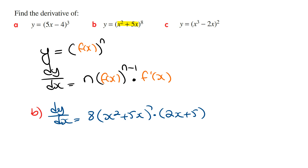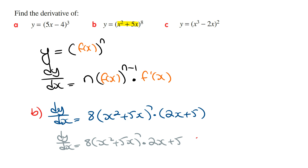Now you need to be a little bit careful here. The derivative of the inside function has two terms, so you need to write this inside brackets. If you didn't write the brackets and wrote the answer as dy/dx is equal to 8 times (x squared plus 5x) raised to the power of 7 times 2x plus 5, then this answer would be wrong, because this is not the same rule. So be careful when multiplying expressions with more than one term — always include it inside brackets.